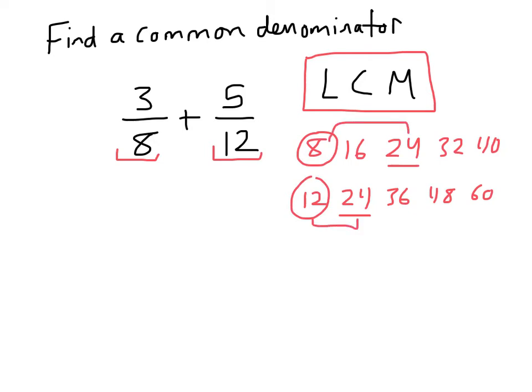So I'm going to rewrite each of these fractions with the denominator of 24, so that I can add up the numerators. So what did we do to 8 to make it 24? 8 times 3 is 24. Whatever I do to the denominator, I have to do to the numerator to create an equal fraction. 3 times 3 is 9. 12 times 2 is 24. I also have to multiply the numerator times 2. 5 times 2 is 10.